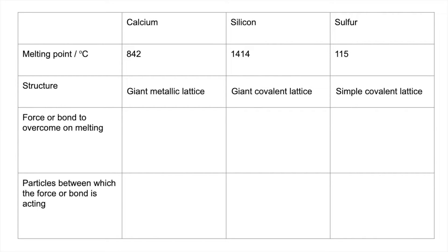So the force or bond to overcome on melting. Calcium is a metal, so it's the metallic bond. Silicon with its giant covalent lattice structure, it's the covalent bond that needs to be broken. And in the case of sulfur, we're breaking induced dipole-dipole intermolecular forces.